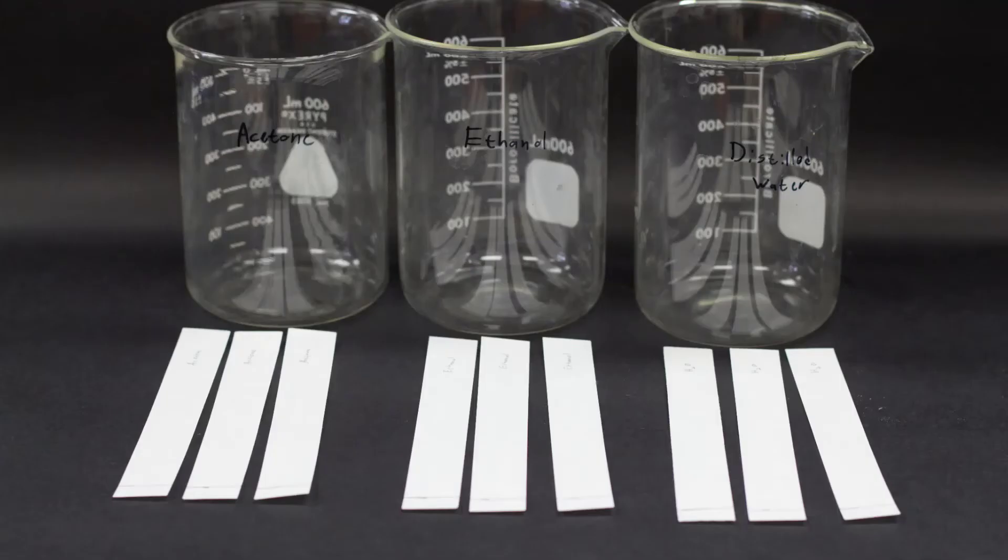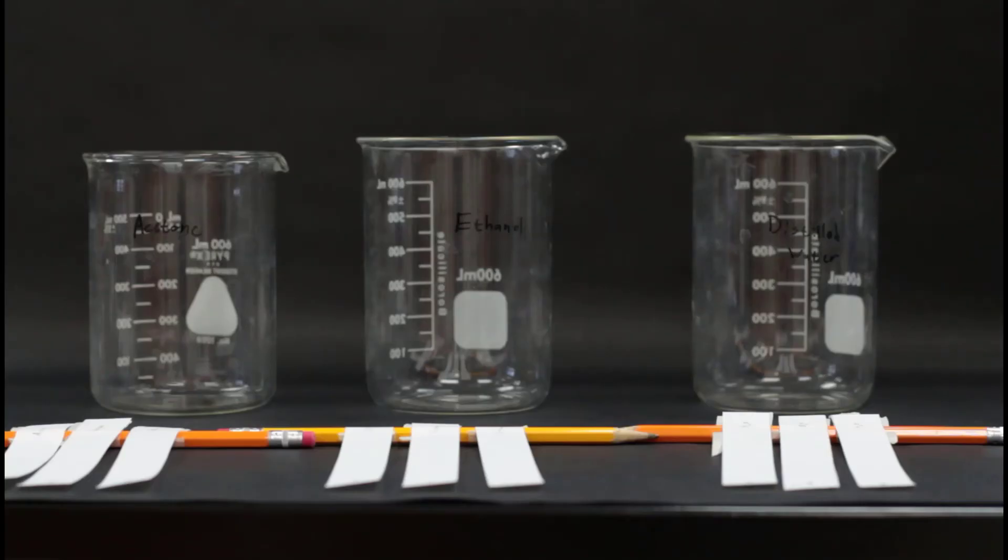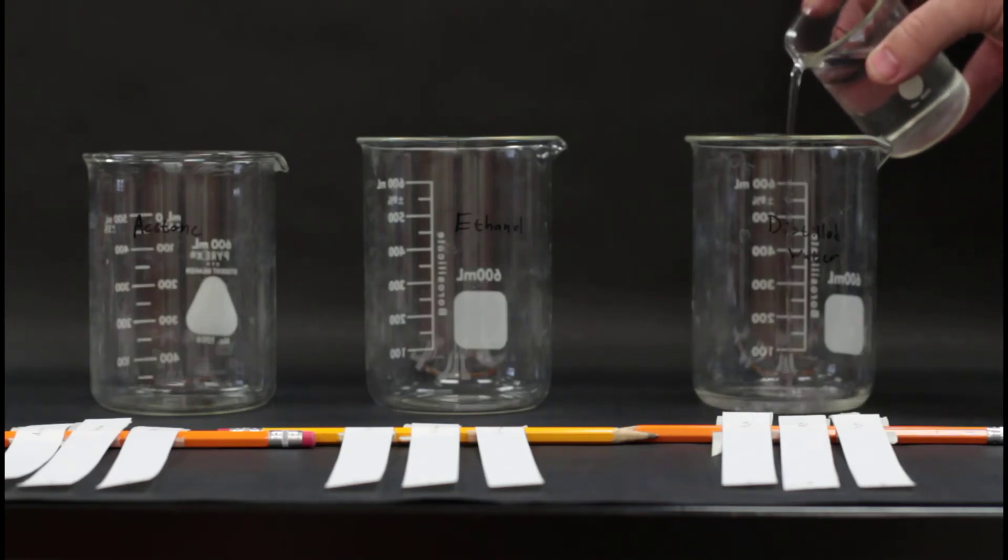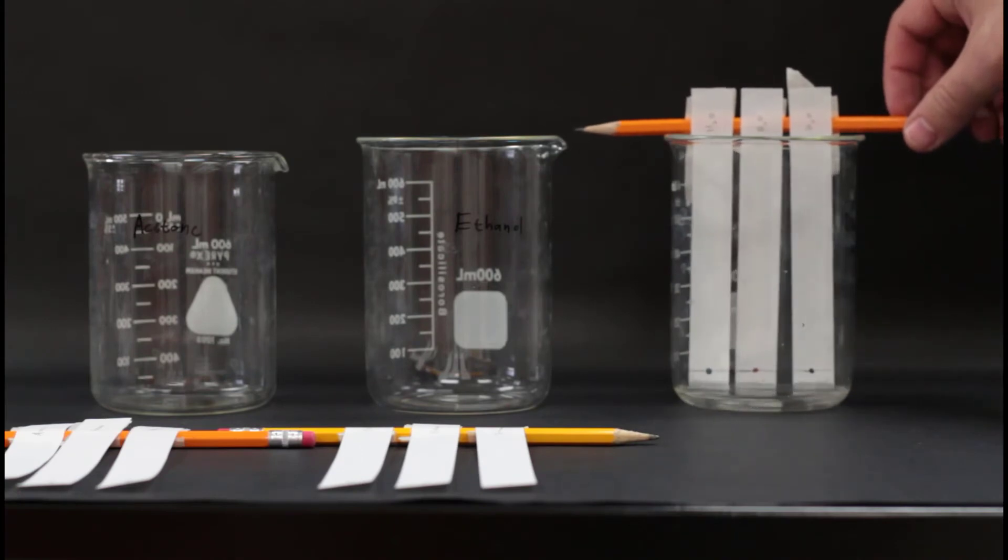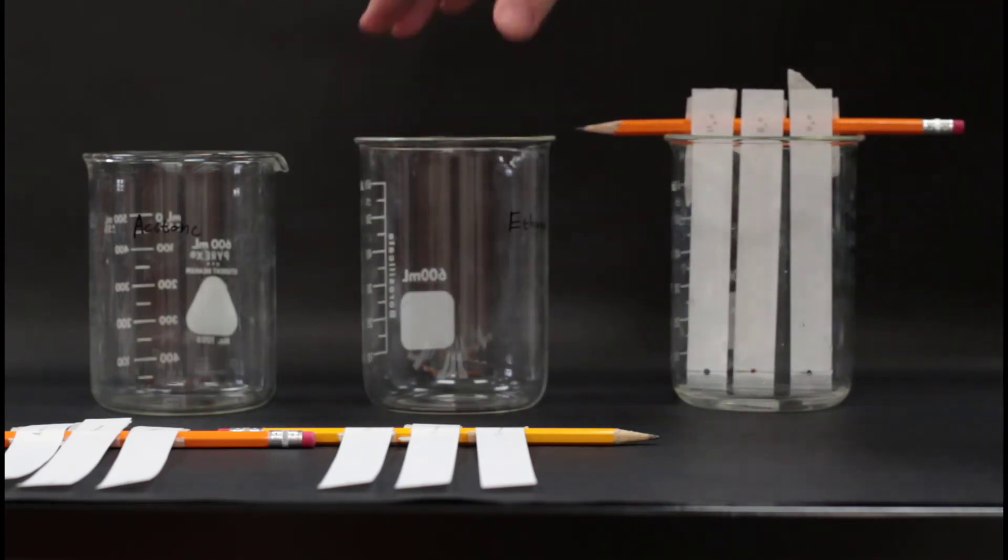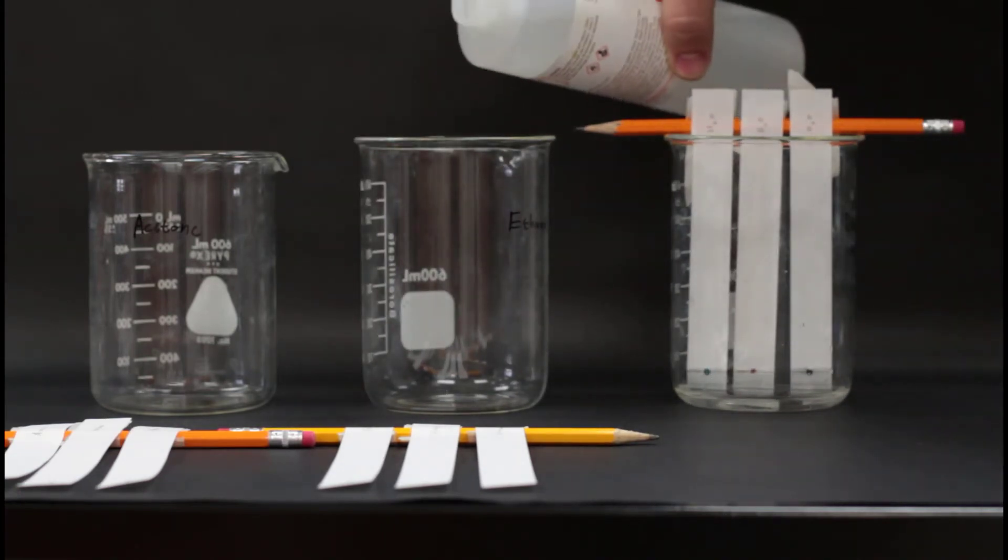Next, label each beaker with the solvent that will go in it. Once all three pencils and beakers are set up, pour the correct solvent into each beaker. One beaker should be for acetone, one beaker should be for ethanol, and one beaker should be for water.